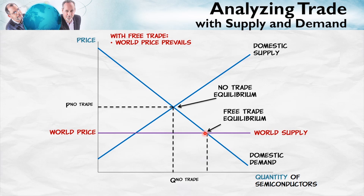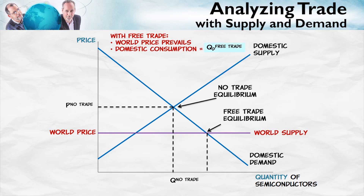The free trade equilibrium would involve greater consumption. At the high price with no international trade, the quantity demanded is here. With international trade, consumers get to buy at the lower world price, so their quantity demanded increases. The quantity demanded will increase to QD free trade, so domestic consumption equals the quantity demanded with free trade.